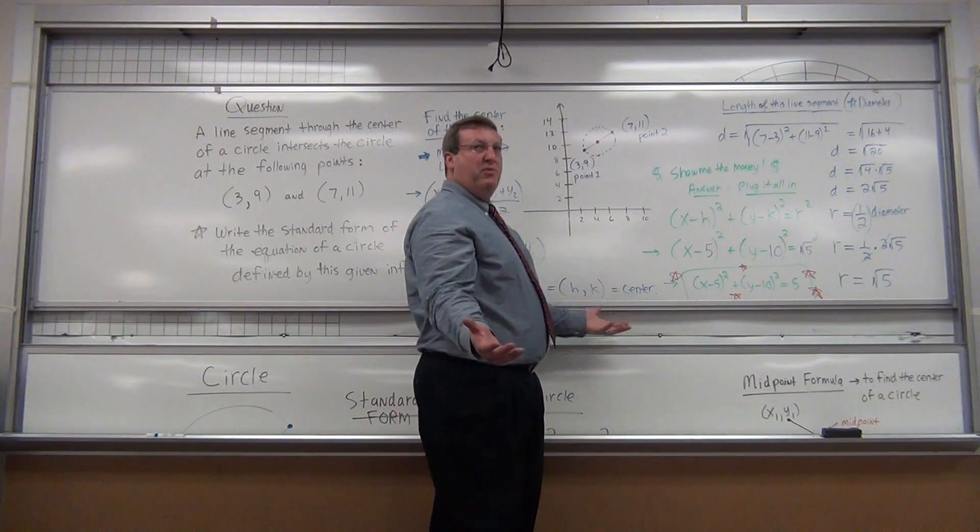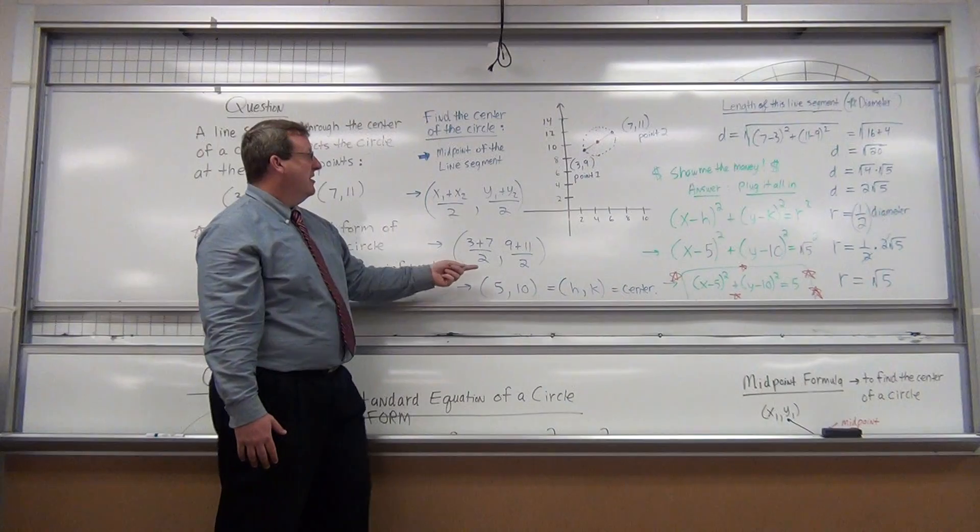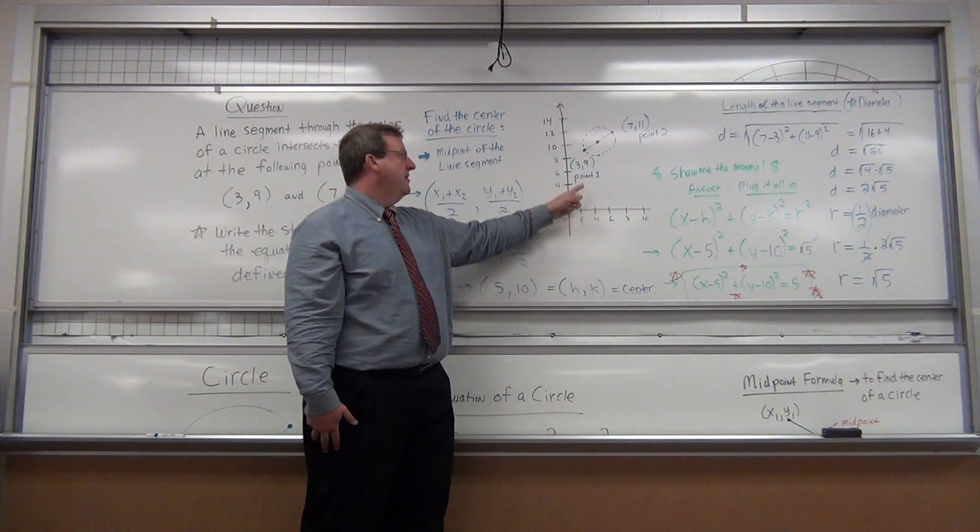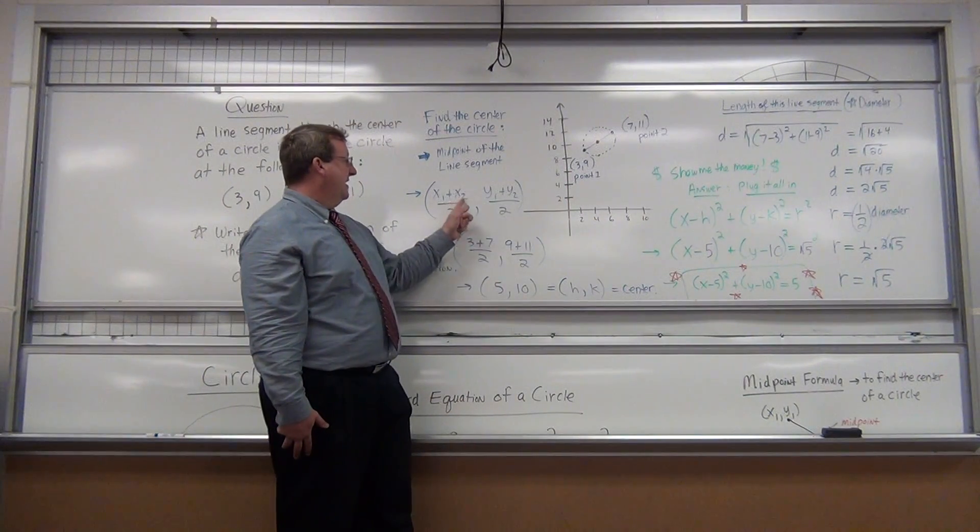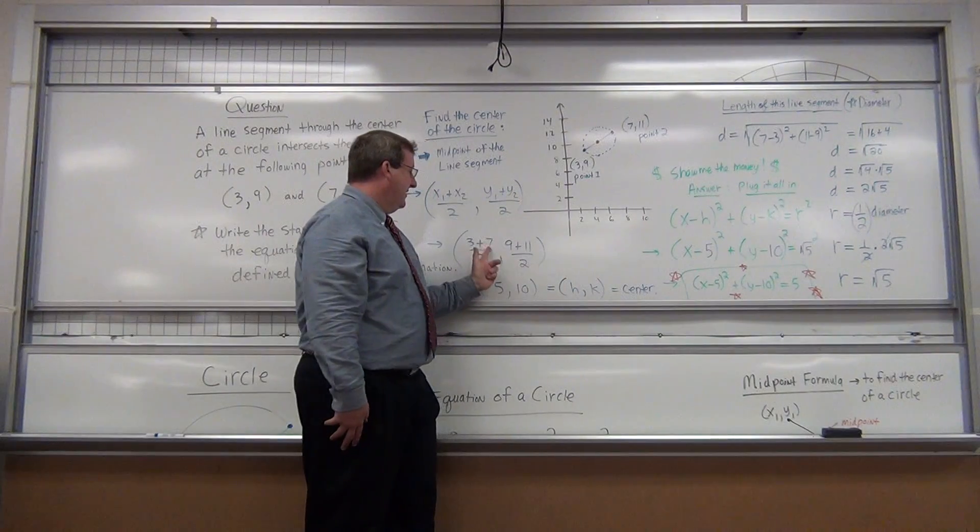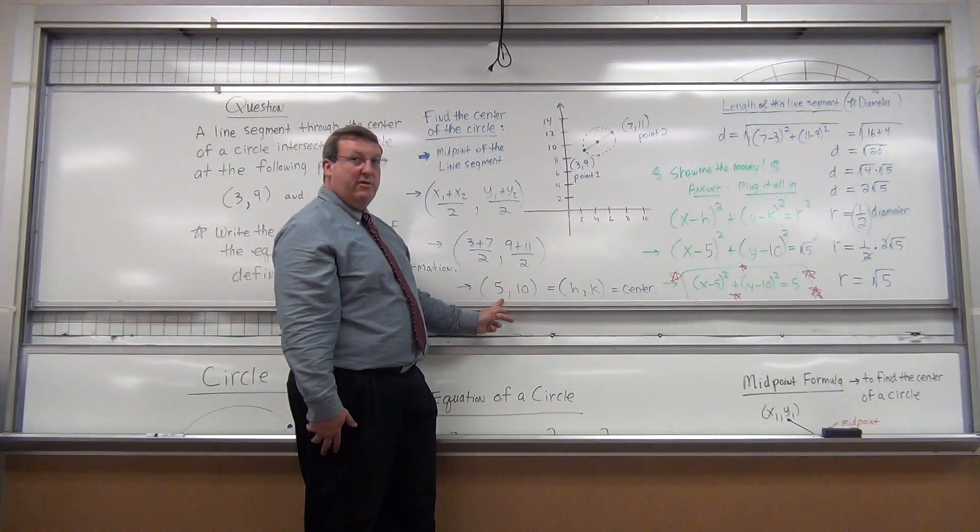So I could use the midpoint formula right off the top to get my center. So my first x1, x1 represents the x value at point 1. 3 + x2, the x value at point 2, which is 7. 3 + 7 divided by 2 to get the average. Your x coordinate of the center is going to be 5.